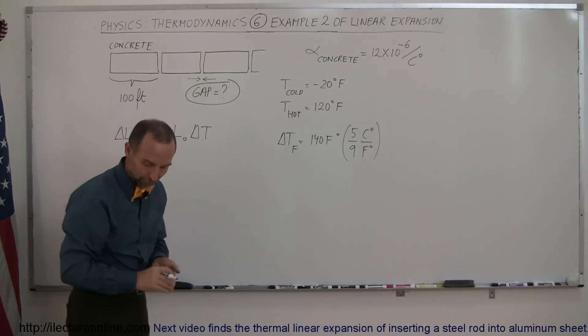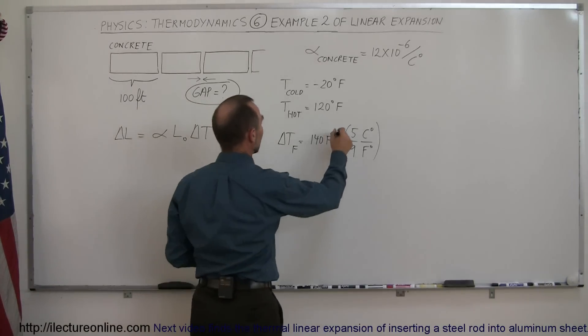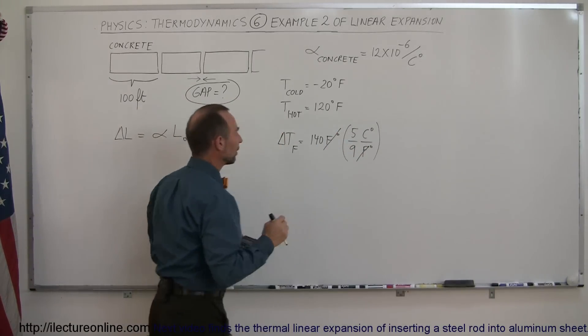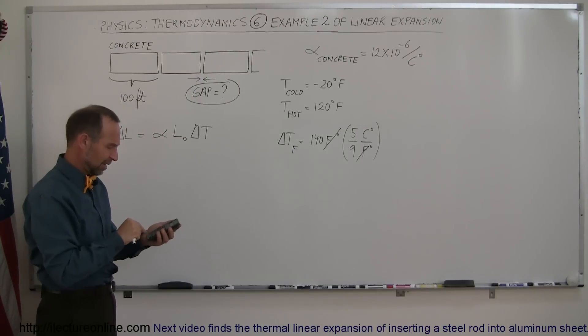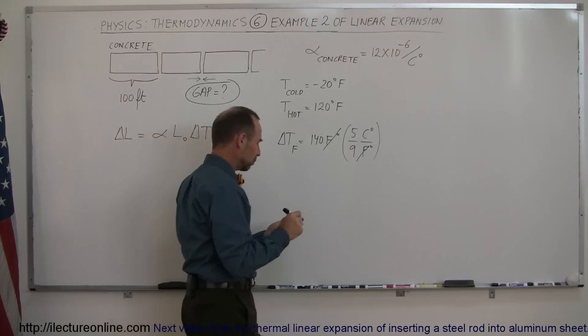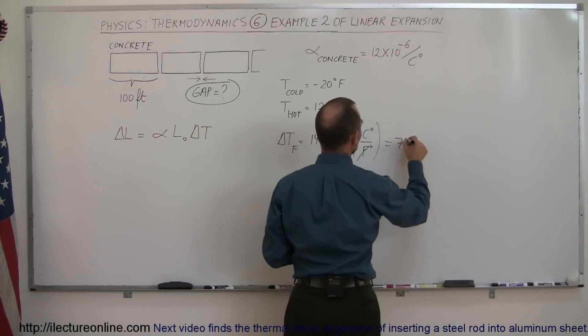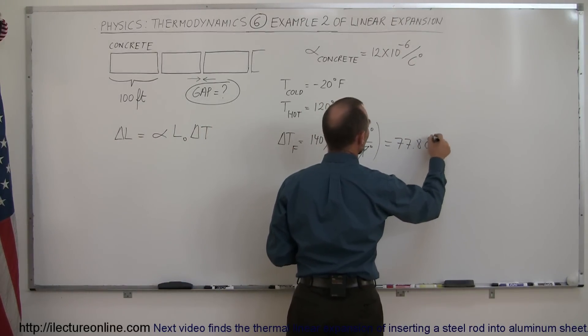Then you can see that this cancels out and we now have centigrade degrees. So we take 140 times 5 divided by 9, and that's 77.8, 77.8 centigrade degree difference.